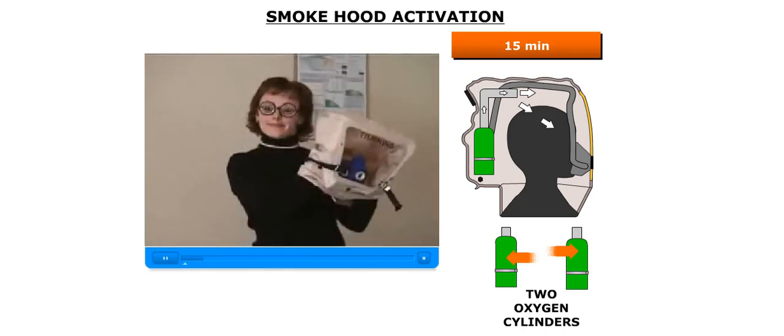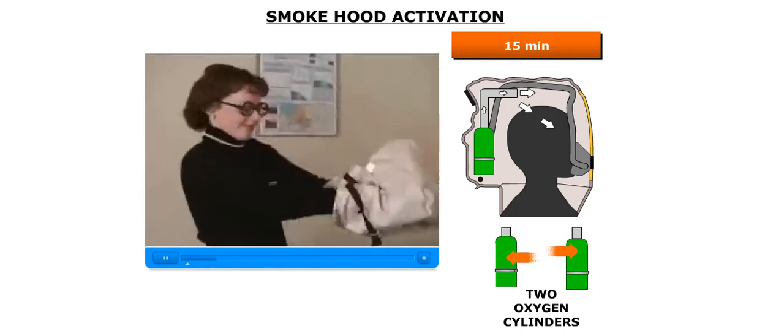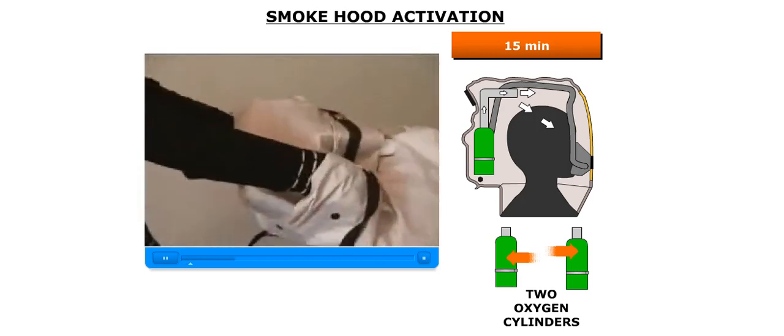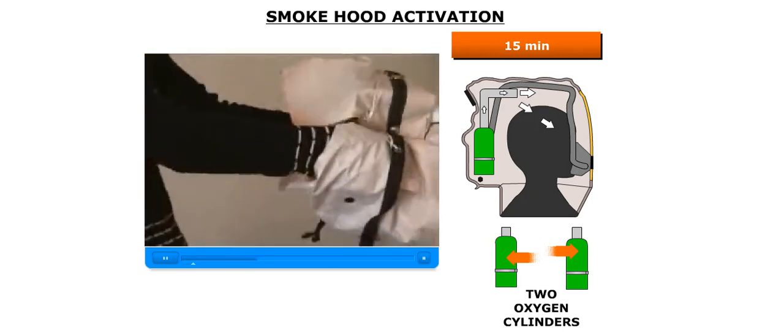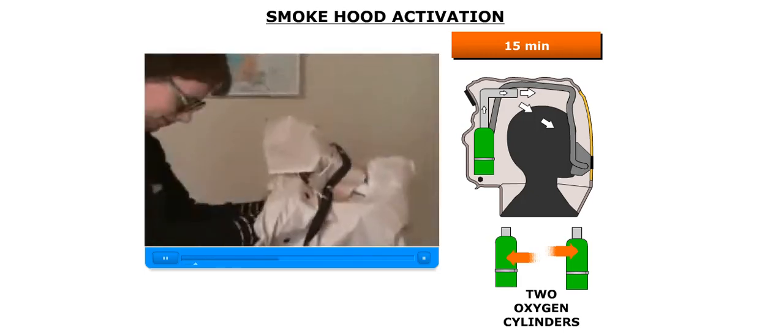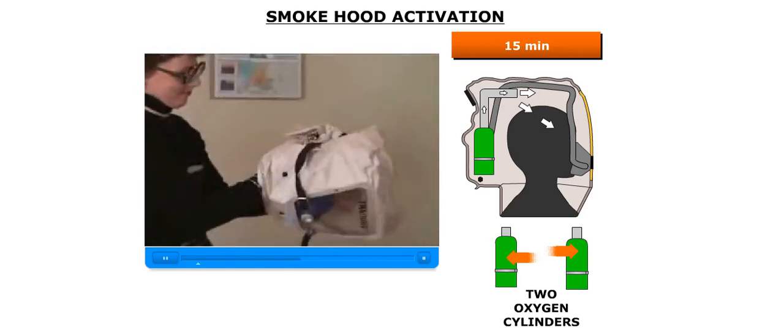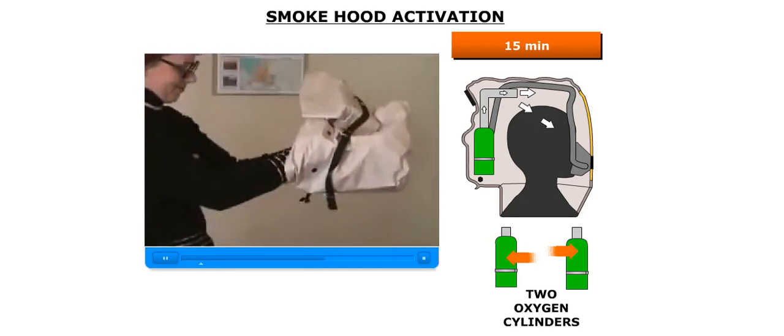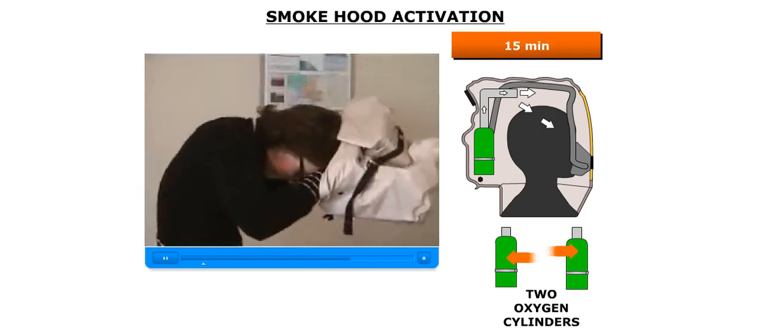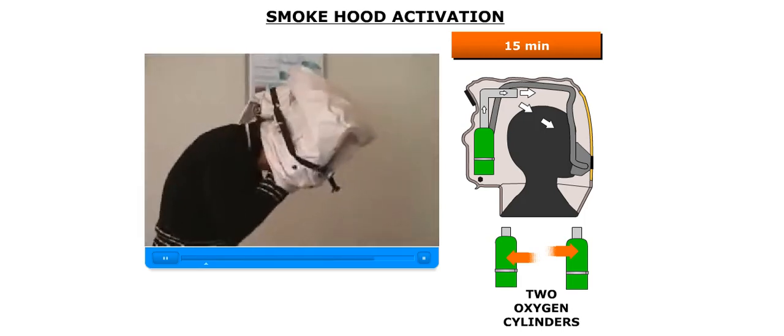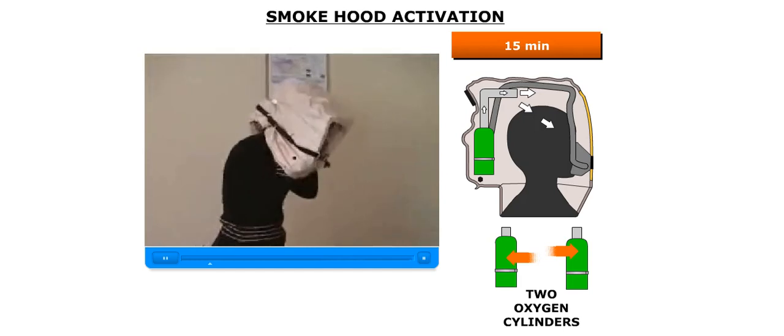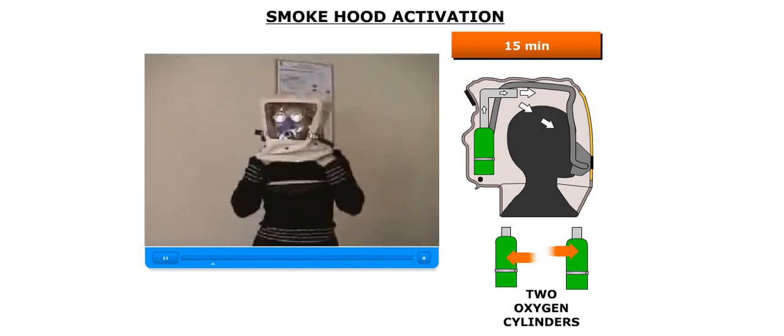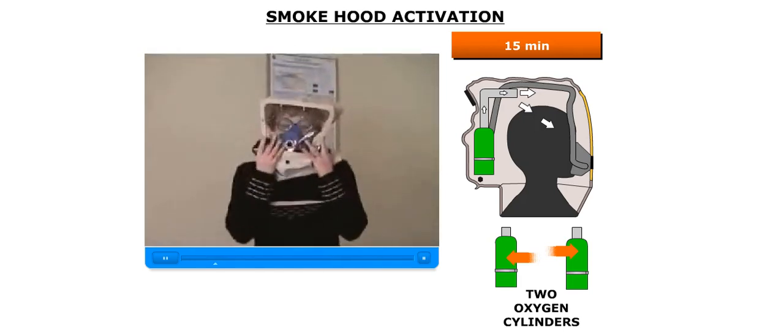To don the PBE, place both hands inside the neck seal opening with palms facing each other and the PBE visor facing downward with the KO2 canister resting on top of the hands. With the head bent forward, guide the PBE neck seal over the top of the head and down over the face, using the hands to shield the face and glasses from the blue oral nasal mask cone.